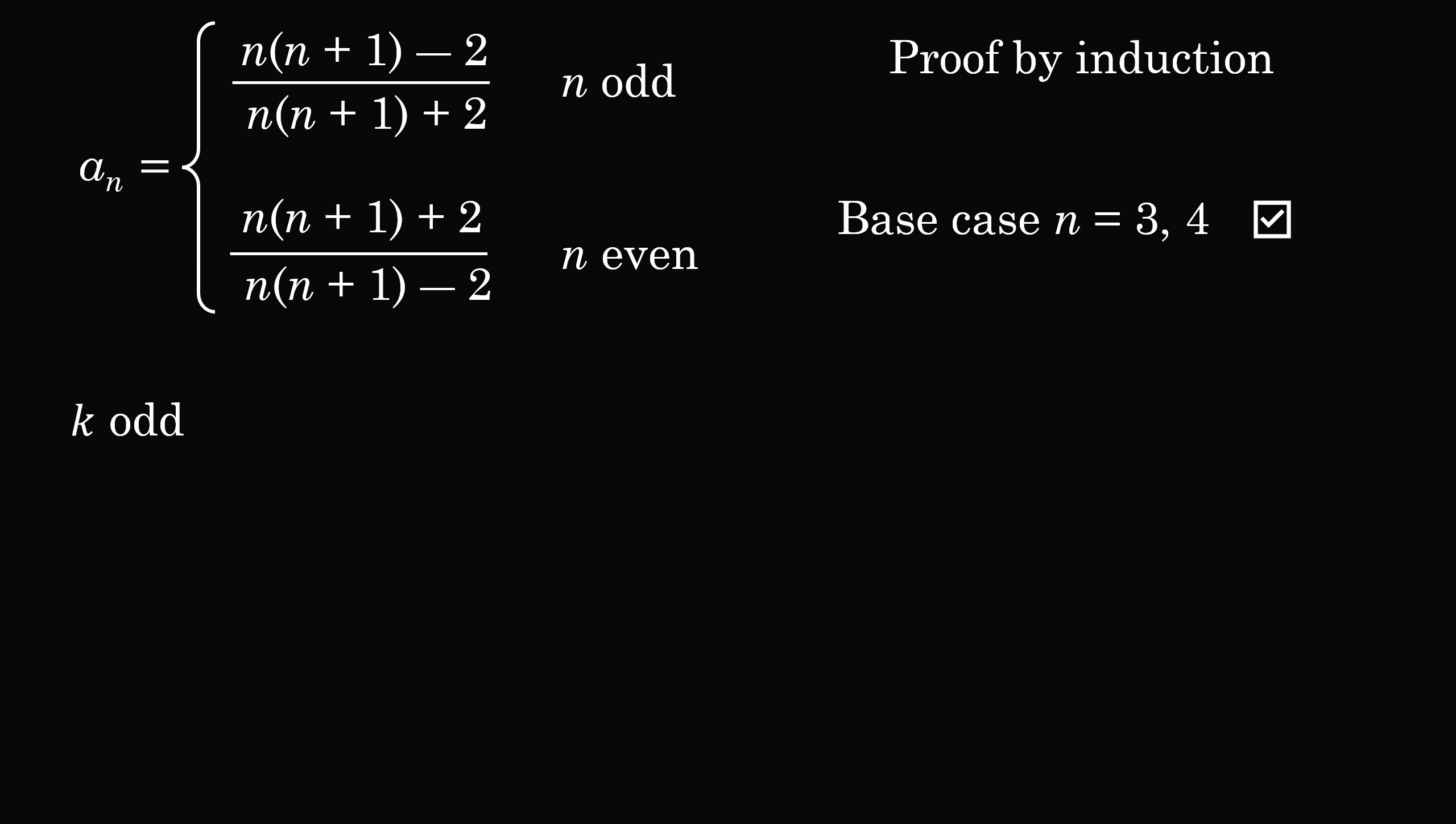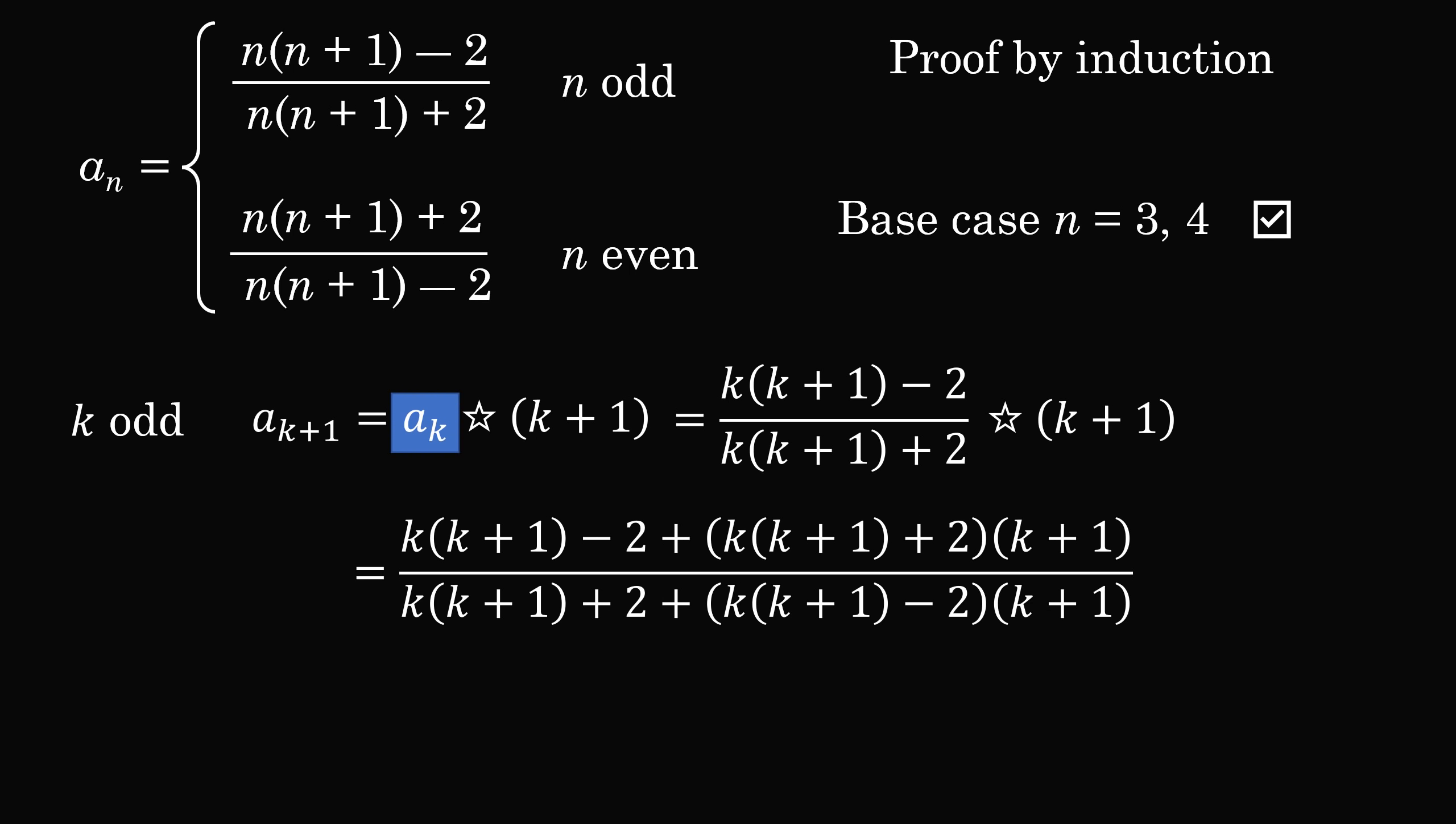Suppose first that k is odd. Ak plus 1 is equal to ak star k plus 1. Since k is an odd number, we can use the formula for ak by the induction hypothesis. We'll substitute in. We now need to do some simplification. I'm going to skip over the nitty-gritty details and just show you a couple steps of the proof. Here's one intermediate step, and then once we do simplification, we get the following fraction. This is exactly the fraction we want for ak plus 1. So we've proven this step.